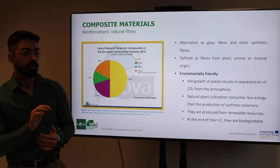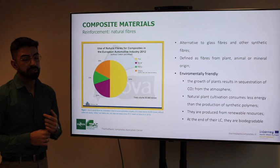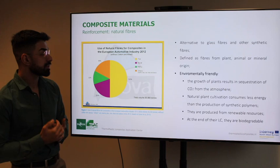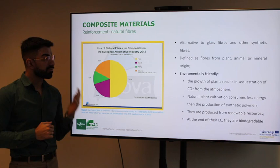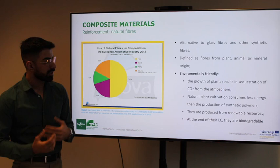Moving to natural fibers, we can see from the graph that their use in industry has already been established since around 2012. Approximately 50% of natural fiber composites are made with flax — a plant fiber — followed by hemp, with others still emerging. They are already in use today.